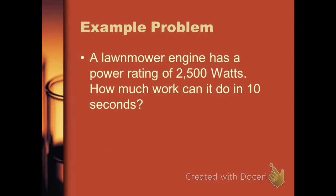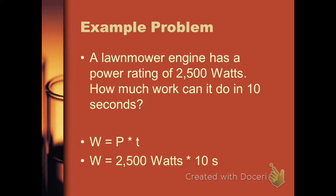Here's a second example. A lawnmower engine has a power rating of 2500 watts. How much work can it do in 10 seconds? Now we're solving for a different variable. Work equals power times time — rearranging the power equals work divided by time equation. 2500 watts times 10 seconds tells us it can do 25,000 joules of work in those 10 seconds.